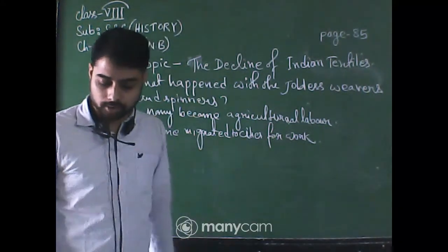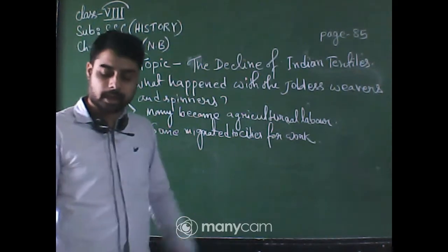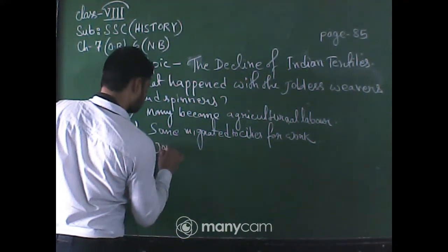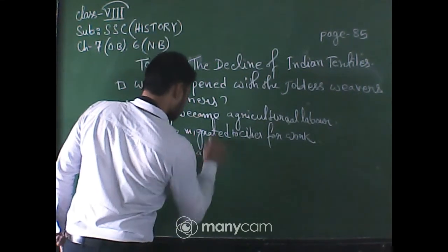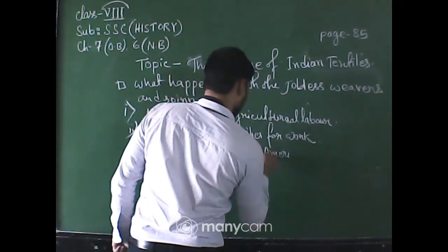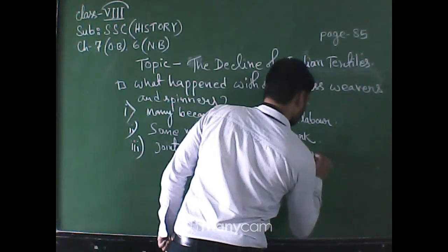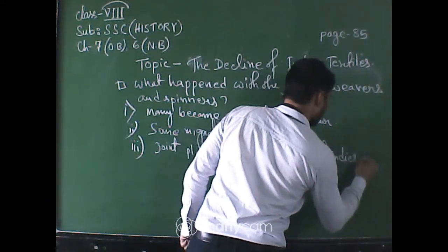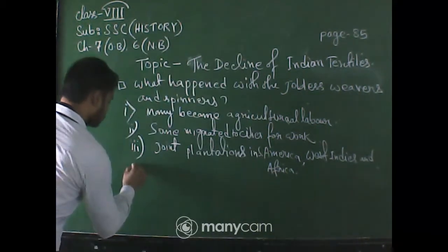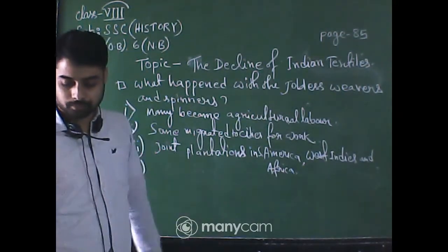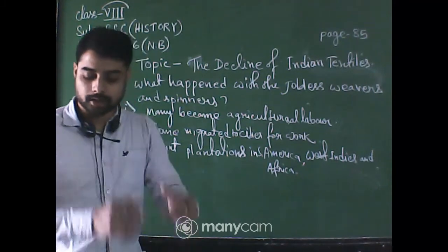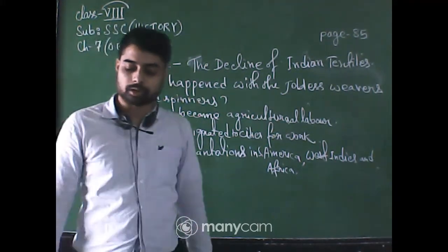Number three: others went abroad in search of work and joined plantations in Africa, South America, and the West Indies. Number four: some joined new cotton mills established by Indian entrepreneurs and businessmen in Bombay, Ahmedabad, Sholapur, Nagpur, and Kanpur.